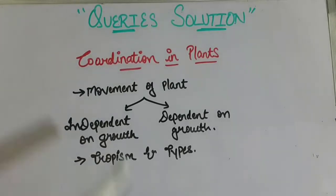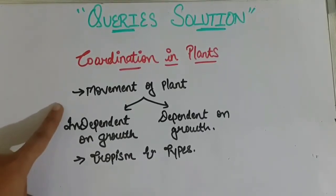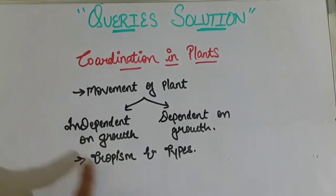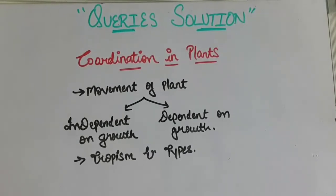Today I'm going to start my new topic which is coordination in the case of plants. We have already covered coordination in animals where we studied the nervous system, neurons, and details about the human brain. In this video I'll be covering coordination in plants, which is achieved through movement. Plants have two categories of movement: one independent of growth and one dependent on growth. I'll also be covering tropism and its types.